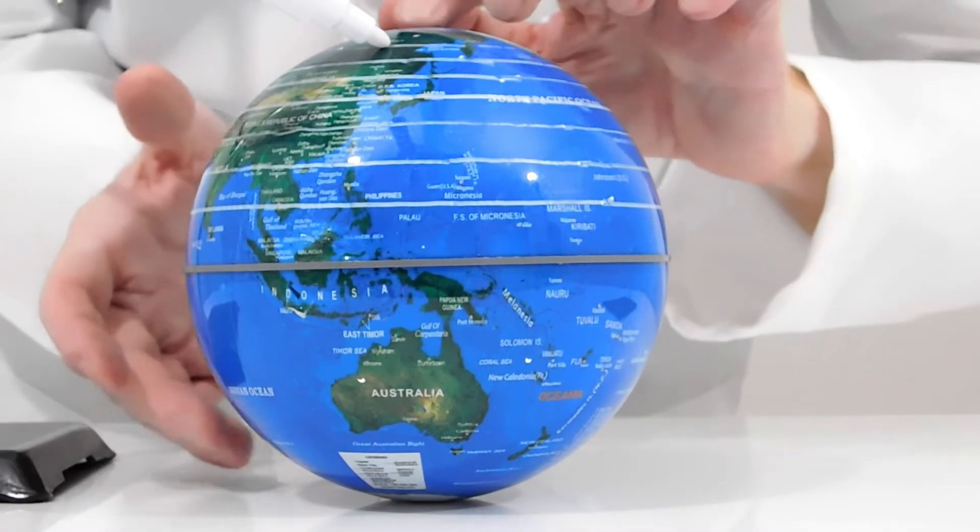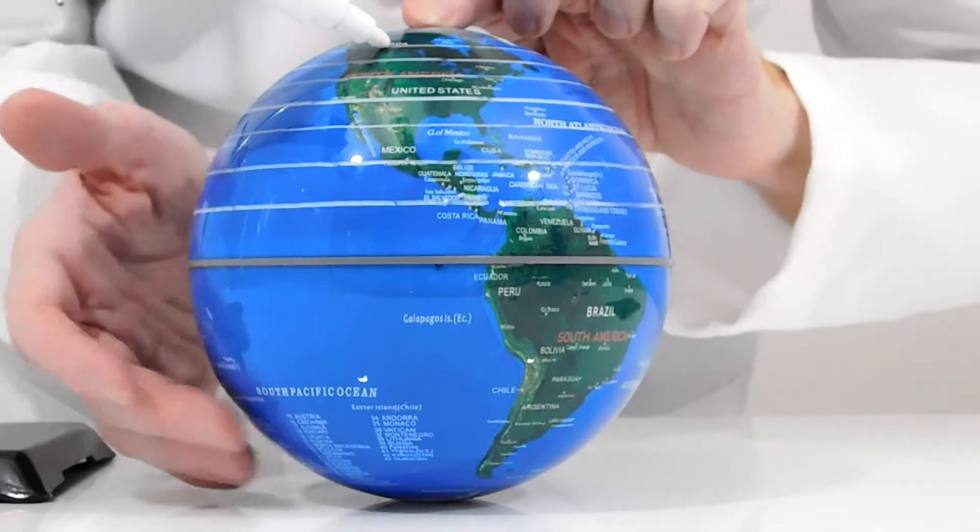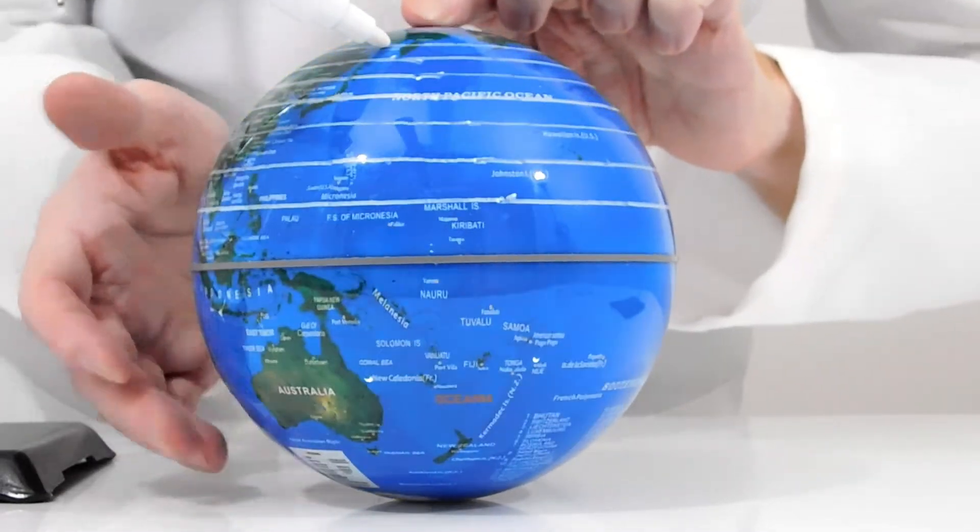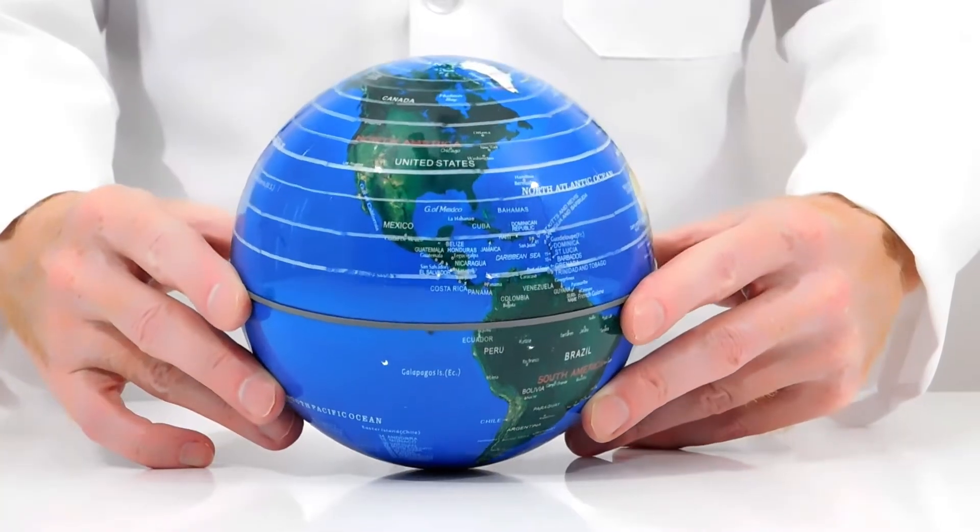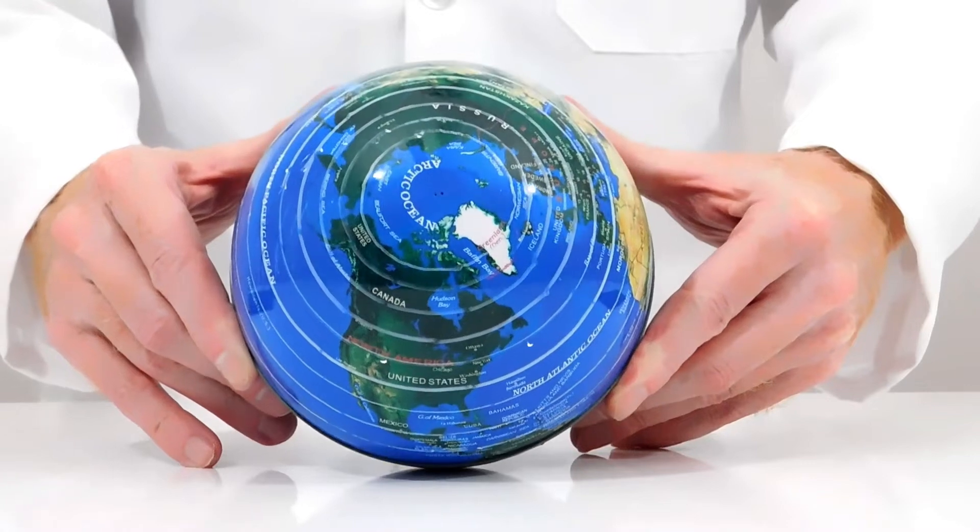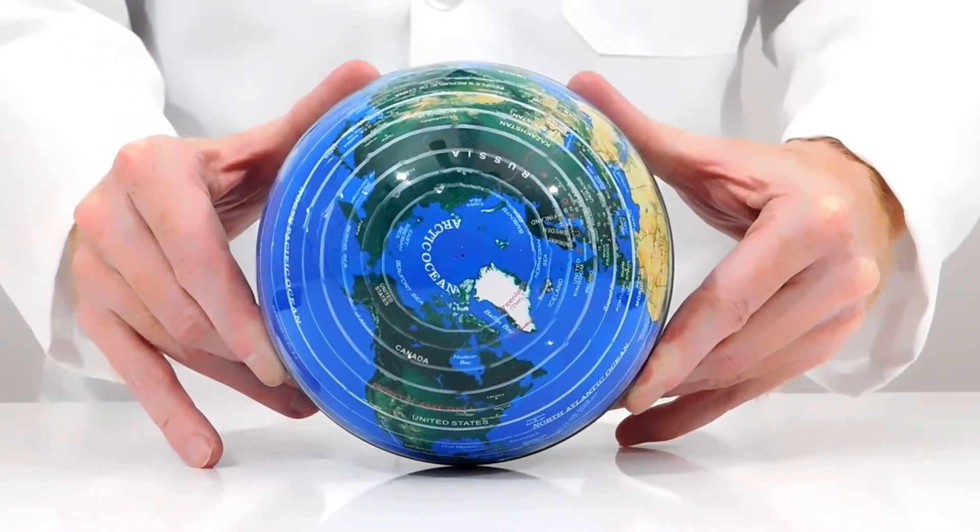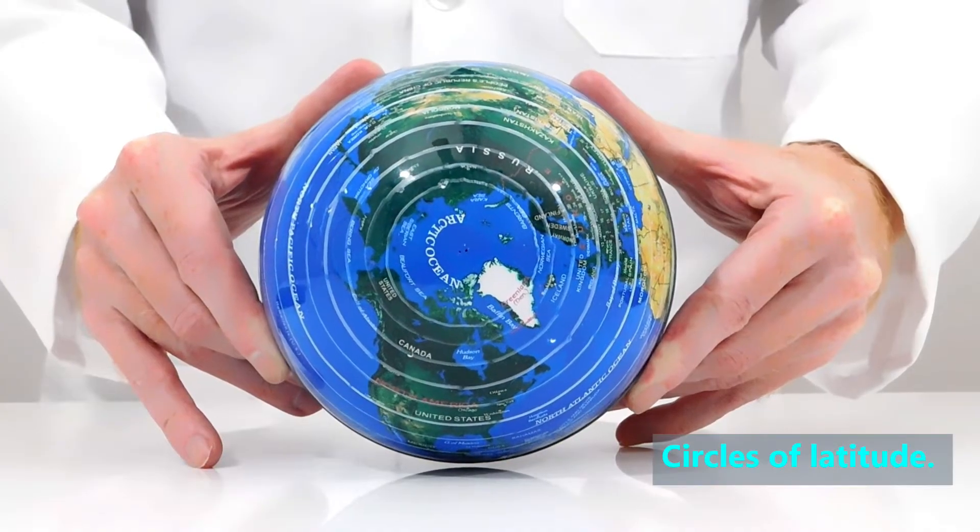The very top of the protractor is 90 degrees, which is the topmost point of the North Pole. It's a point, so we cannot draw a line at 90 degrees. When we look at the lines from the perspective of the North Pole, we see many circles which get smaller as they get closer to the North Pole. This is why sometimes we call lines of latitude by another term, which is circles of latitude.